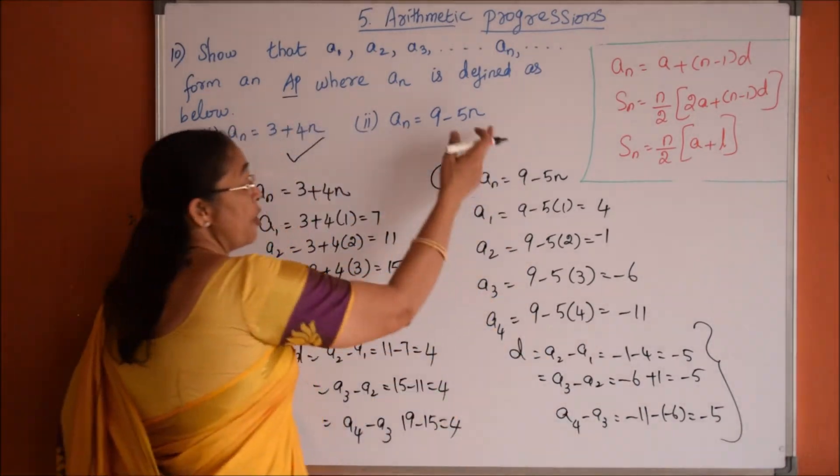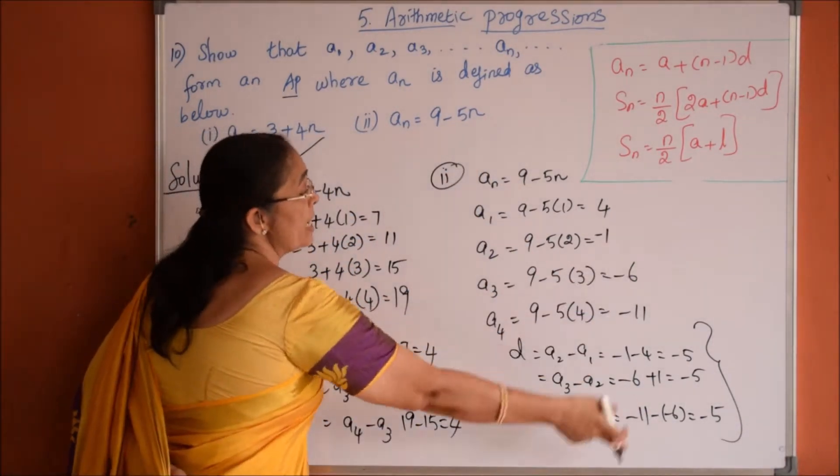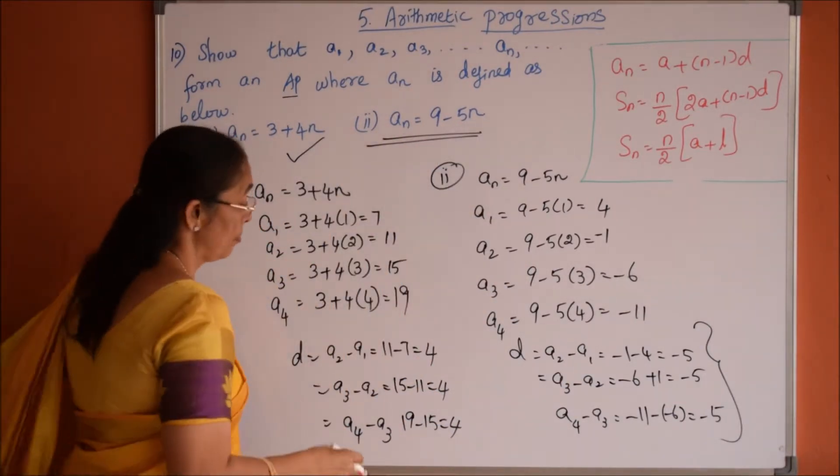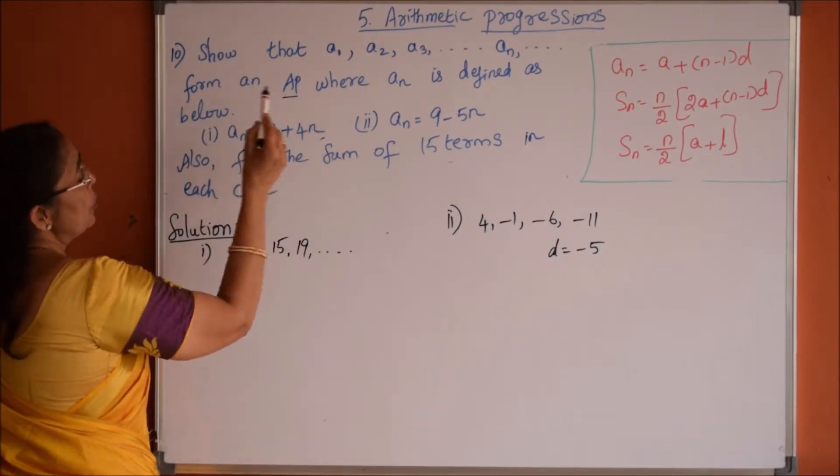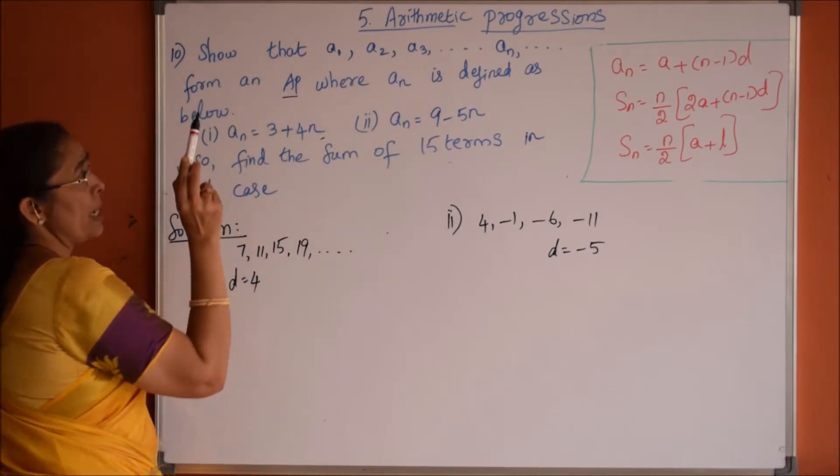So the given list of numbers are having same common difference that is minus 5. Therefore this one form an AP. 10th problem continuation is there. We have to show this a_n equals 3 plus 4n and a_n equals 9 minus 5n form an AP.